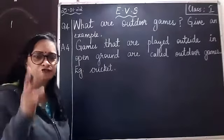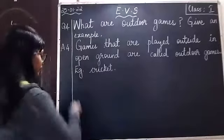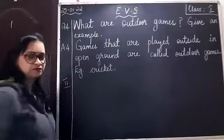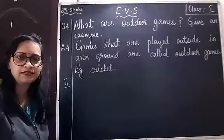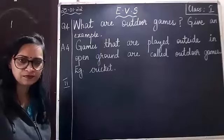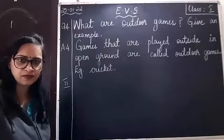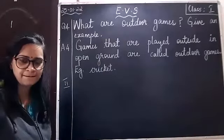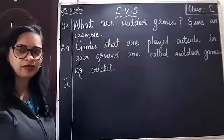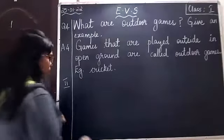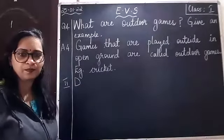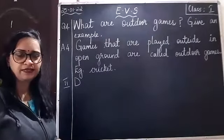Now I want you to leave two lines. Leave two lines and write Roman number two. Now write down capital D.